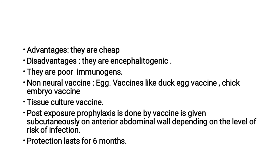Advantages of the infant brain vaccine: they are cheap. Disadvantages: they are encephalitogenic and poor immunogens. Non-neural vaccines include egg vaccines using duck vaccine, chick embryo vaccine, etc. Then tissue culture vaccines.